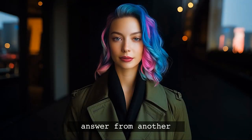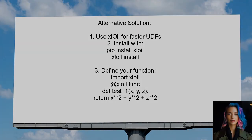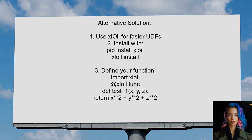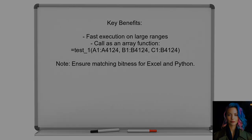Let's dive into a different answer from another user. An alternative approach to improve the speed of Excel Wings UDFs is to use Excel Oil. This tool connects Excel and Python with minimal overhead, making calculations much faster. When using Excel Oil, you can call your function on large ranges and it will execute almost instantaneously. Just ensure that your Excel and Python versions match in bitness.